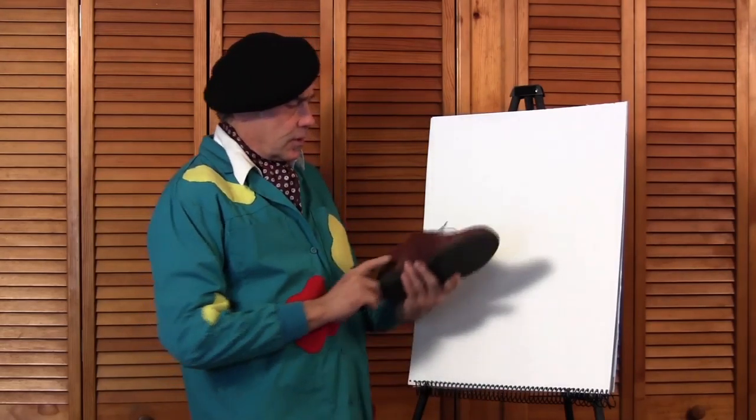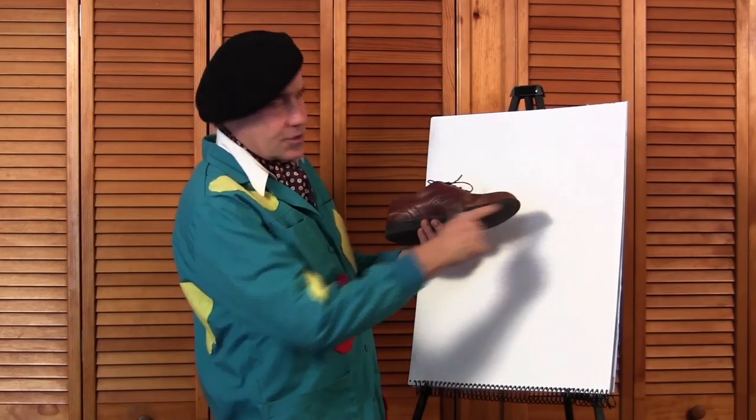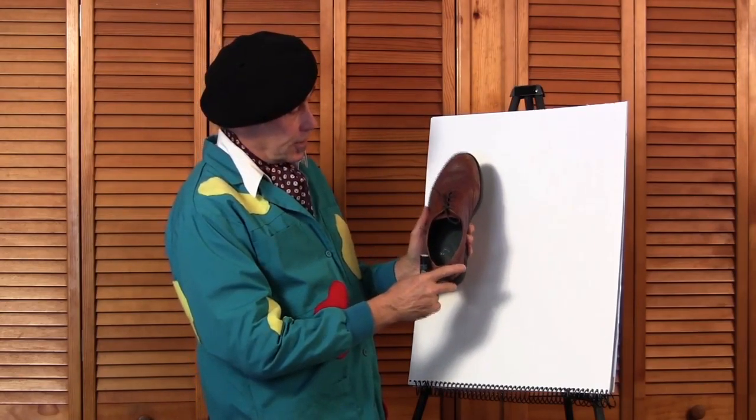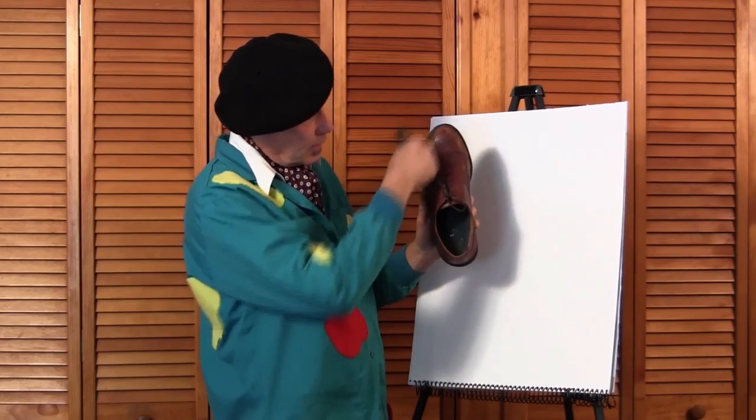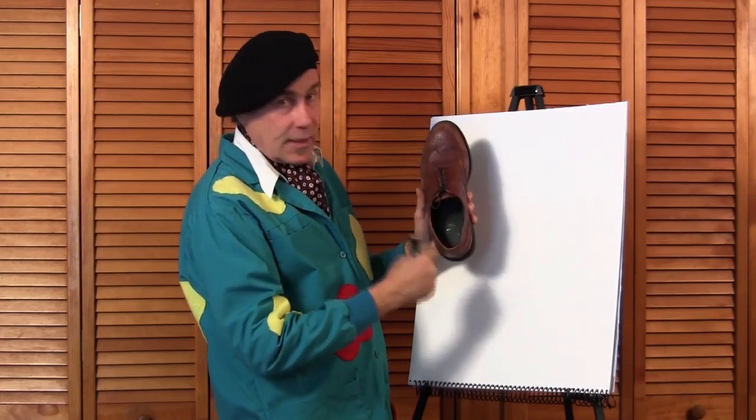Oh, speaking of ovals. This shoe from the side is a triangle. But if you look at it this way, it's an oval. And there's another oval down here.